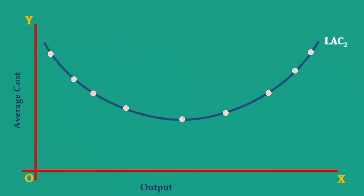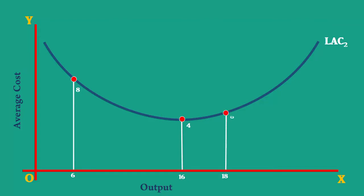Each point on the Long Run Average Cost Curve shows the output and its corresponding average cost. For example, the firm can produce 6 units with an average cost of 8 rupees, 16 units at an average cost of 4 rupees, and 18 units at 6 rupees.